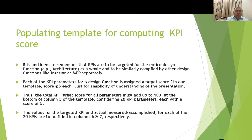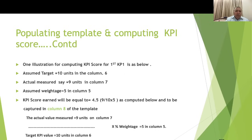When populating the template, KPIs target the entire design function — architecture as a whole, or similarly interior or MEP separately. Each KPI parameter is assigned a target score, all adding up to 100 in the weightage column. For illustration: assume the target in column 6 is 10 units and the actual in column 7 is 9. With weightage in column 5 being 5, the KPI score in column 8 equals 9 divided by 10 multiplied by 5, giving a score of 4.5.